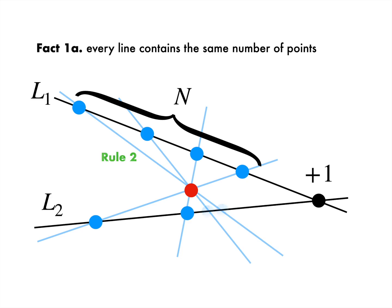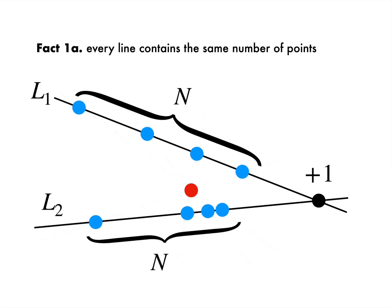By rule one, these will hit L2, meaning we'll have at least n points on L2 apart from the first one. There can't be any more because if there were, we could draw a line through that point and the exterior point to get another point on L1. But we already used up all the points on L1. This means every line must have the same number of points.